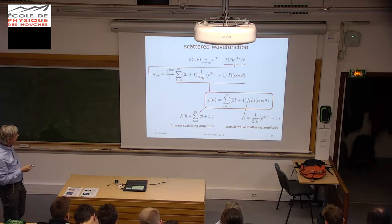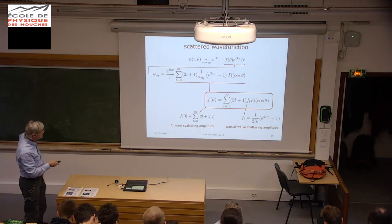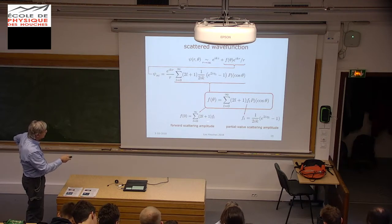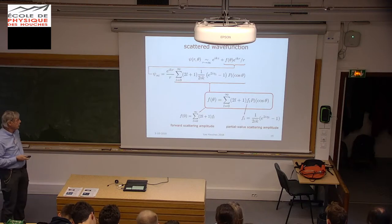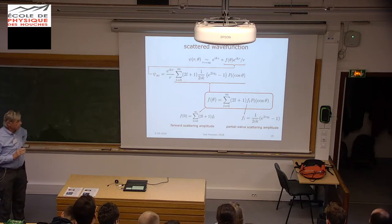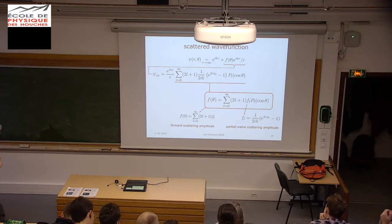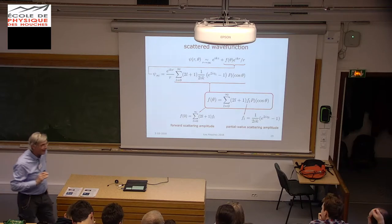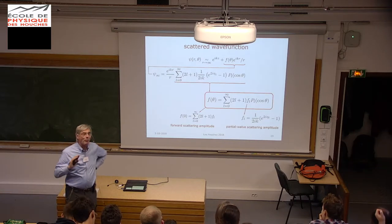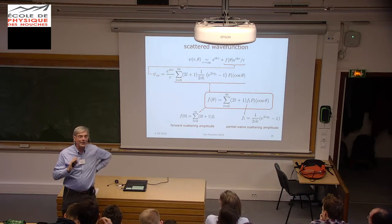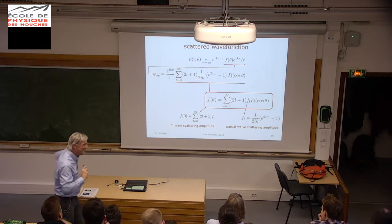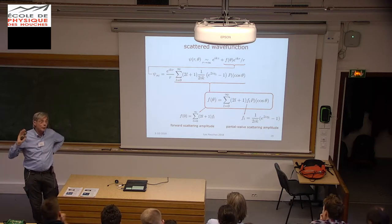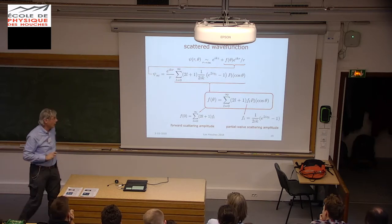The forward scattering amplitude can be written as the sum over all partial waves of (2L+1) times the L-wave scattering amplitude. It is a bit technical, but important that you go through this at least once. The derivation is completely general—it has nothing to do with cold atoms specifically—and it applies to all values of L.